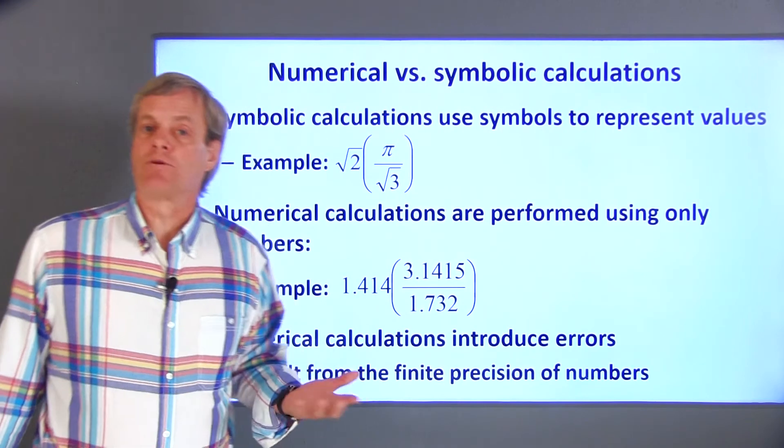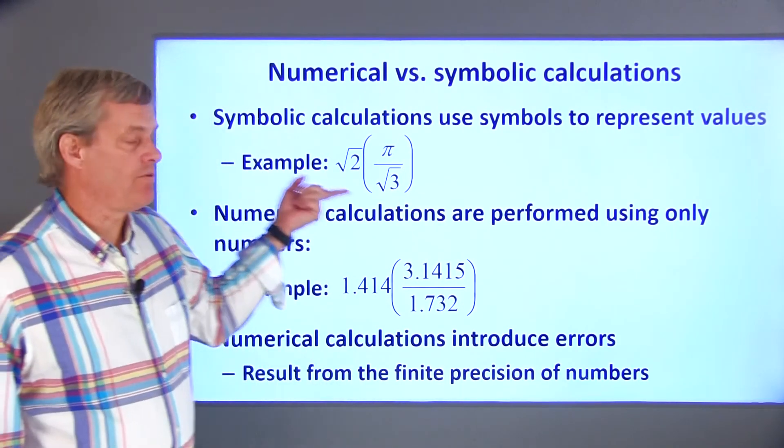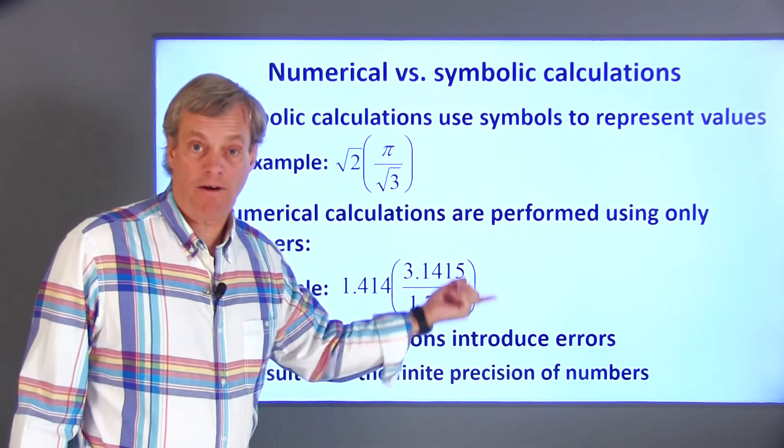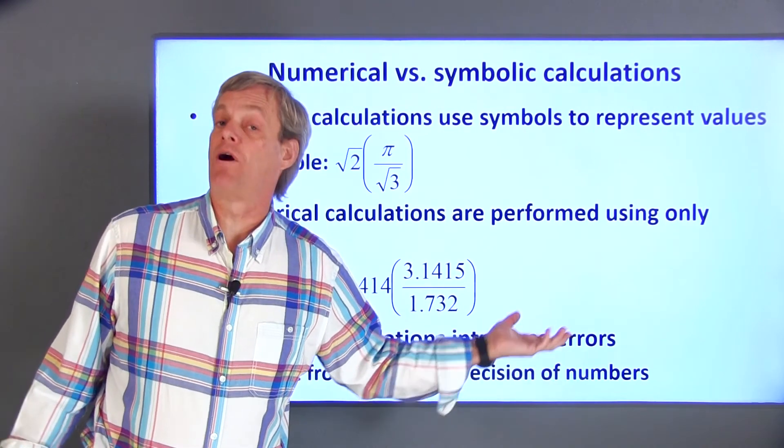So as engineers, our numbers will always have some level of allowable error. In this case, we'd evaluate this expression using an approximation and pass a number which contains an acceptable error onto the machine shop.